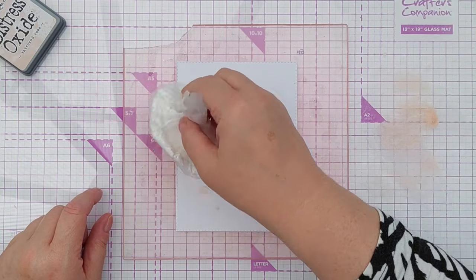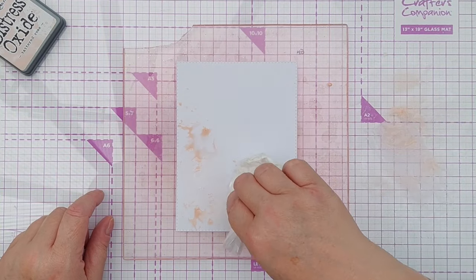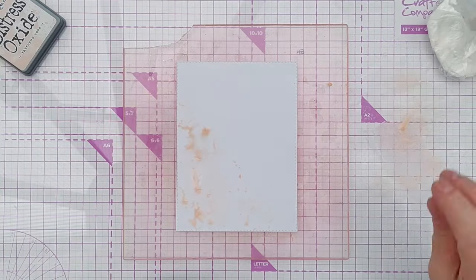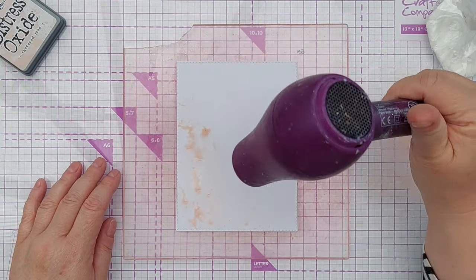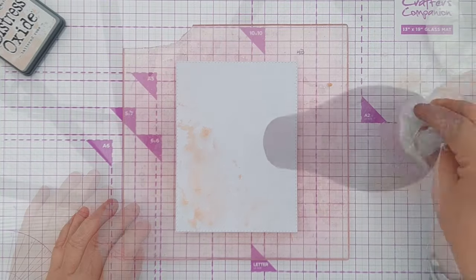If you want to know how to make and use a smusher there is a whole playlist which I will link up in the video description. Once I'd added the first layer of smushed ink I dried it with my hairdryer and then added a second layer.